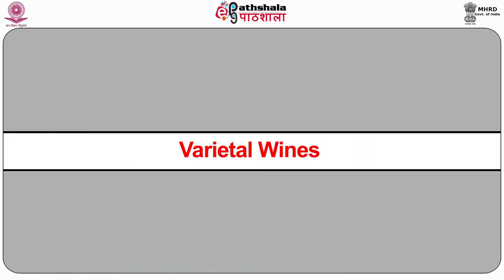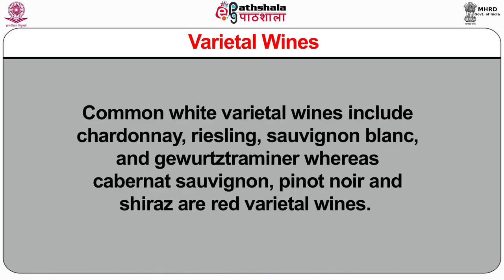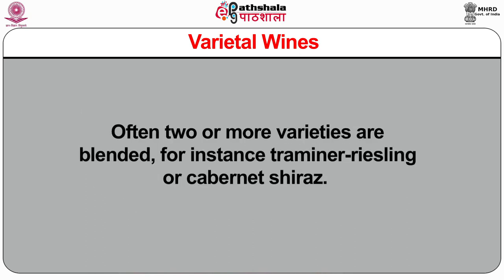Varietal wines are those wines which carry a variety label — the label tells you the variety of grapes from which the wines are made. Common white varietal wines include Chardonnay, Riesling, Sauvignon Blanc and Gewurztraminer, whereas Cabernet Sauvignon, Pinot Noir and Shiraz are red varietal wines. Often two or more varieties are blended — for instance, Traminer Riesling or Cabernet Shiraz.